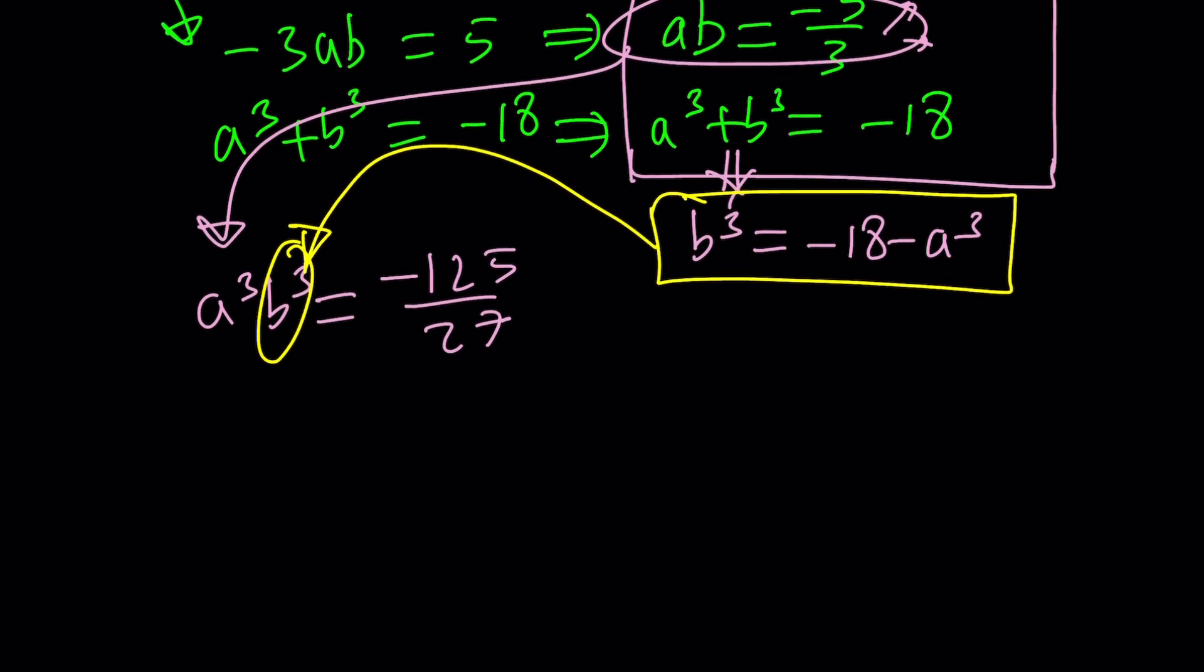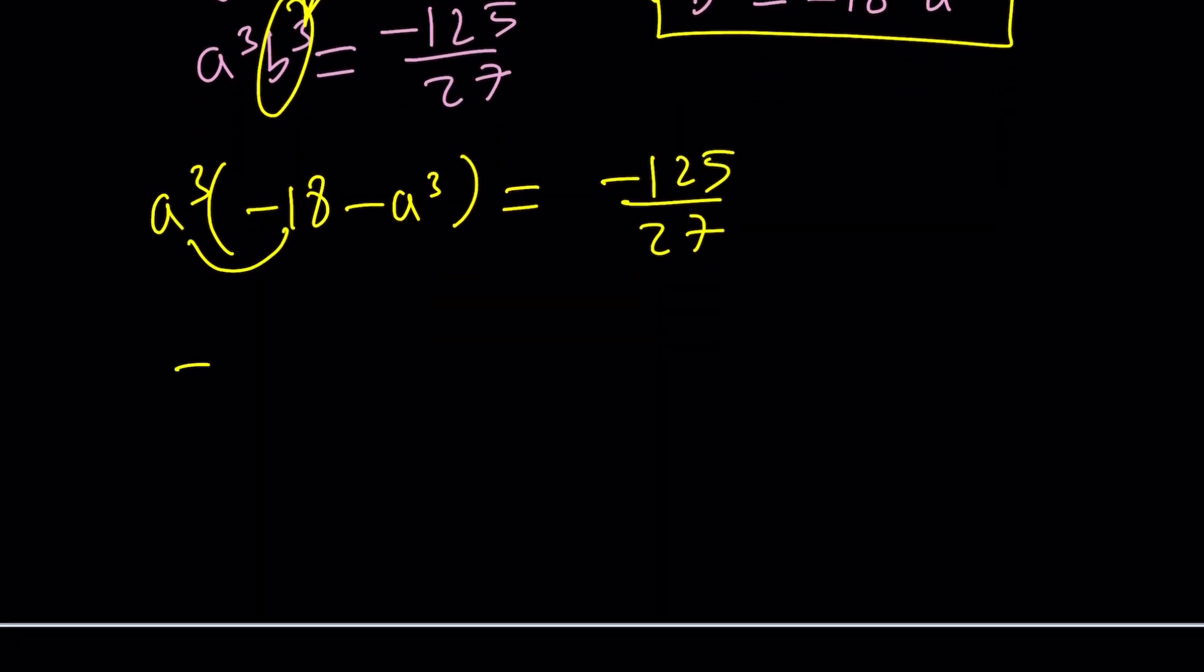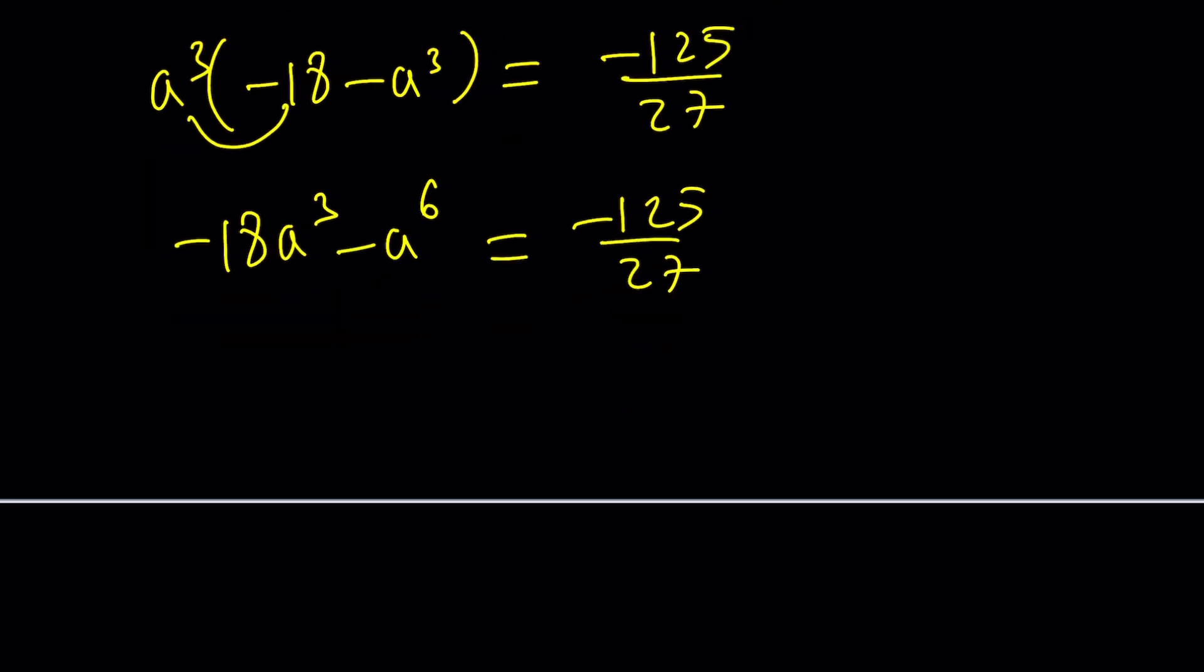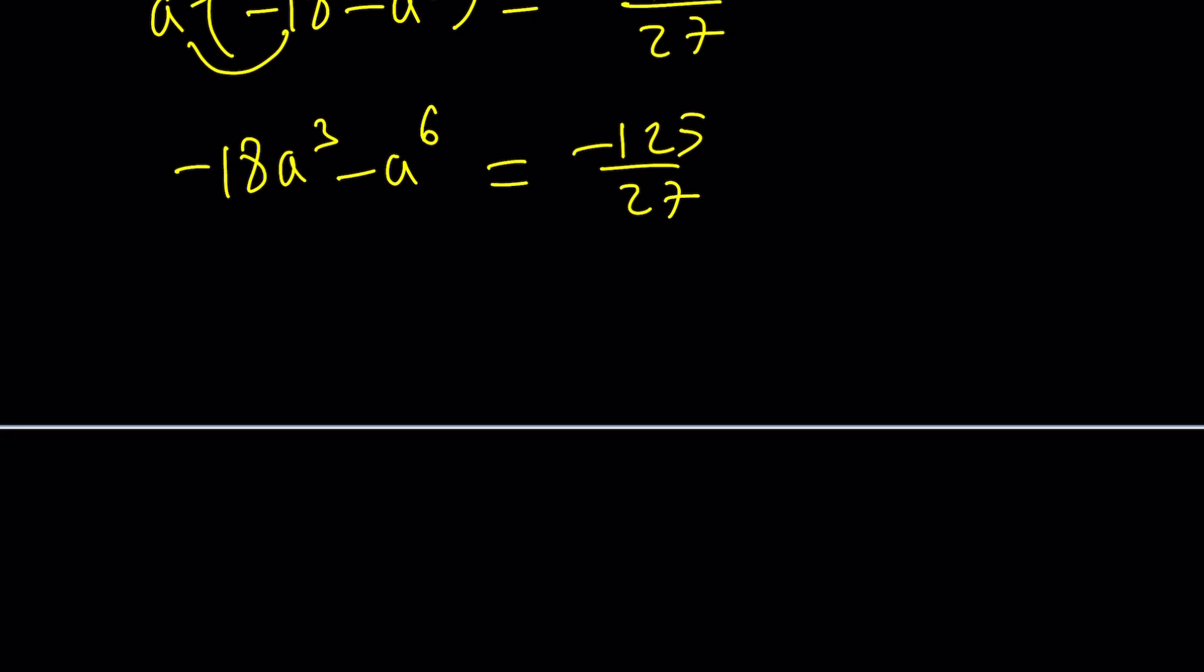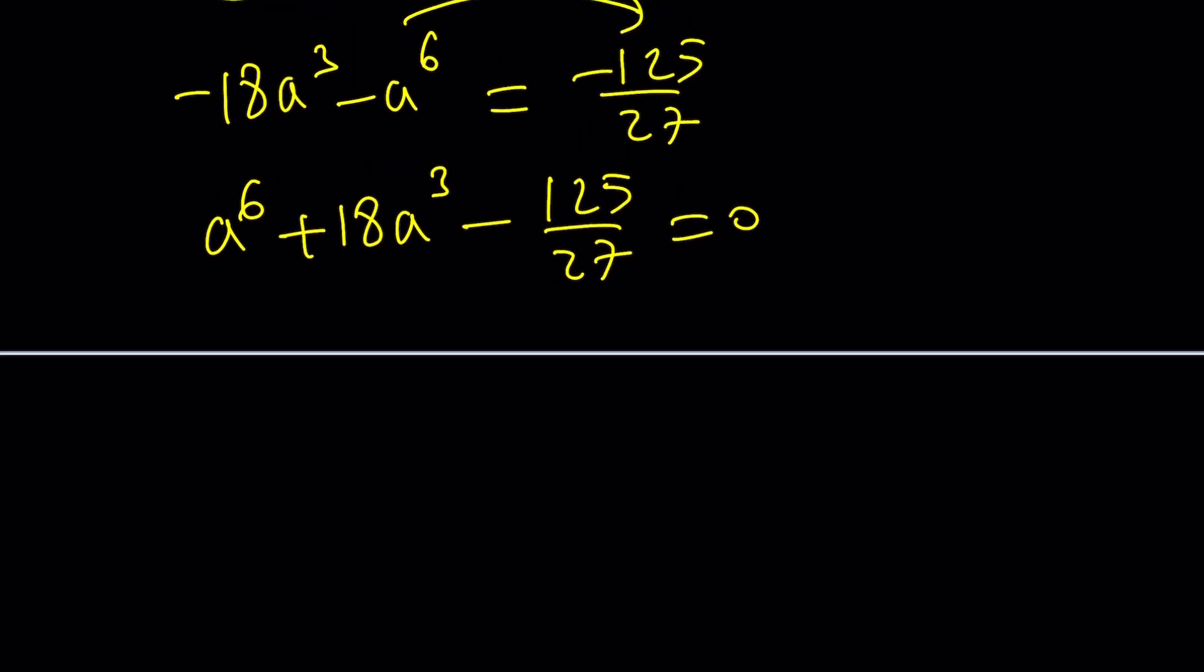That gives us the following: a³ multiplied by -18 - a³ equals -125/27. And then if you distribute, -18a³ - a⁶ equals -125/27. And then add the terms on the left hand side on both sides, I mean the opposites, so that you can put everything on the right hand side which will become the left hand side now. So it's going to look like this: a⁶ + 18a³ - 125/27 equals zero.